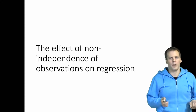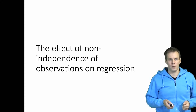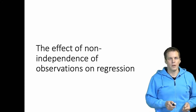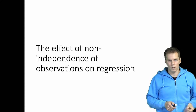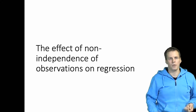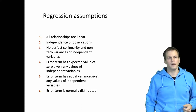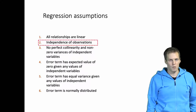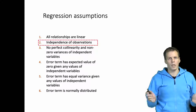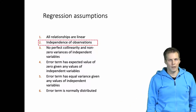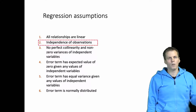What is the impact of non-independence of observations on regression analysis, and what kind of problems could that cause for empirical analysis? Let's take a look. Here are the six regression assumptions according to Wooldridge, and the second assumption is the independence of observations.